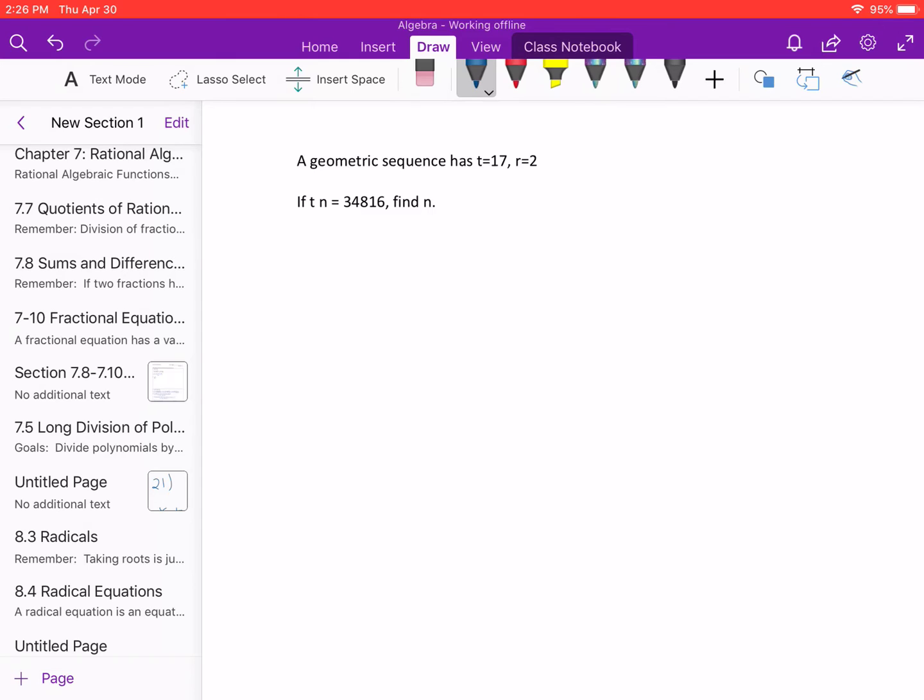So a geometric sequence has t equals 17, r equals 2, and t sub n equals 34,816, find n.